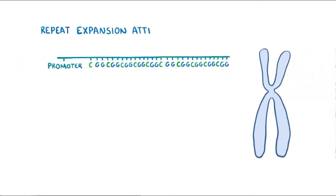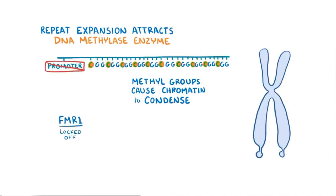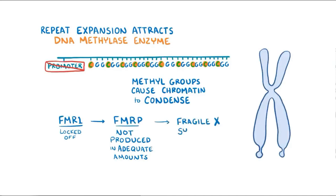The repeat expansion attracts a DNA methylase enzyme to the site and causes the cytosines in the CGG repeats to become methylated. These bulky methyl groups cause the chromatin, which is DNA wrapped around histones, to condense. When it's in a condensed form, regions of the FMR1 gene can't be bound by transcription factors. As a result, the promoter of the FMR1 gene is locked in the off state, so its product, FMRP, can't be made in adequate amounts, and that leads to Fragile X syndrome.